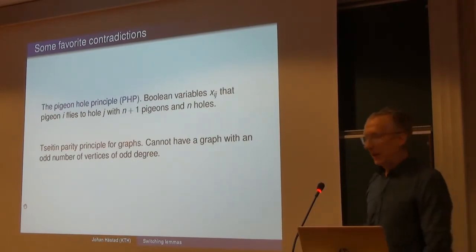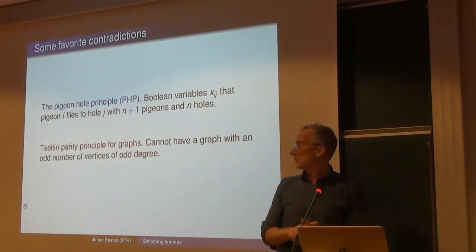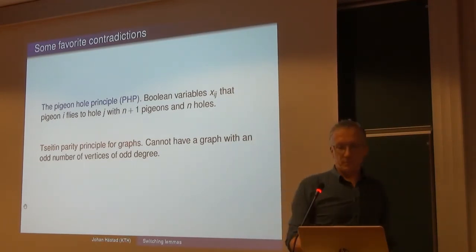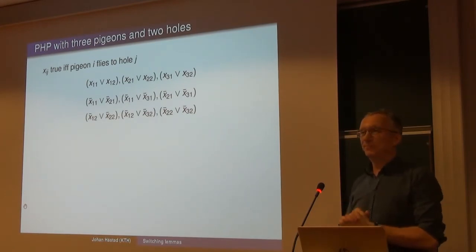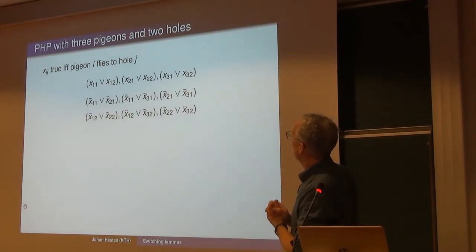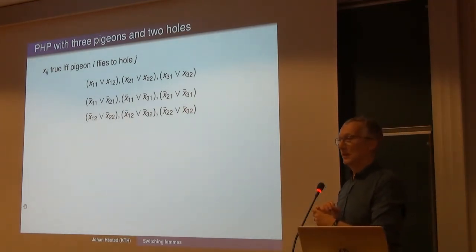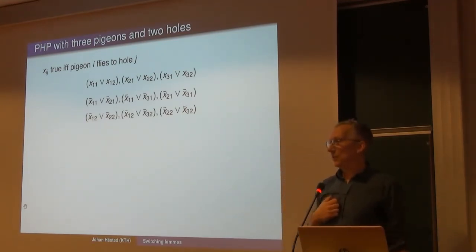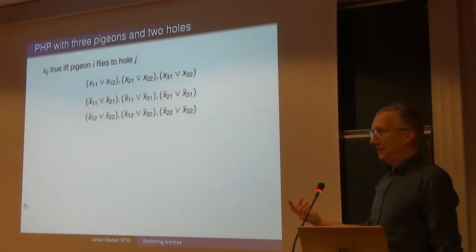The favorite contradiction to play with is the pigeonhole principle — n+1 pigeons flying into n holes. For 3 pigeons and 2 holes: X_ij is true if pigeon i flies into hole j. The first three axioms say each pigeon flies somewhere. The next axioms say no two pigeons fly into hole 1, and no two into hole 2. Even for this simple case the resolution proof takes some thought — it's 7 steps ending with a contradiction where pigeon 1 and pigeon 2 must both fly into hole 2.